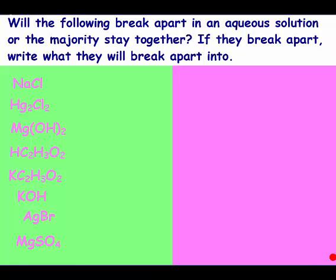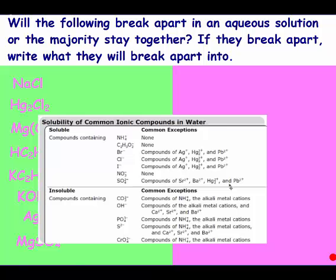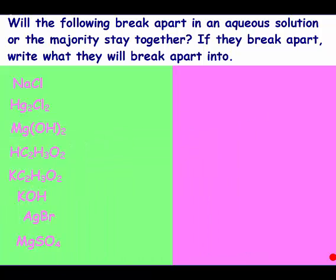Now we're going to ask if the following will break apart in an aqueous solution or if the majority will stay together. If it breaks apart, we write the equation for what it breaks apart into. Strong acids, strong bases, and soluble salts should break apart; all others — insoluble salts, weak acids, and weak bases — should stay together. The first one: sodium chloride starts with sodium and doesn't have hydroxide, so it is a salt. All chlorides are soluble except those three — sodium is not one of them, so it's soluble. You also know it's soluble because it's group 1A. When it breaks apart, you get sodium ion and chloride ion.